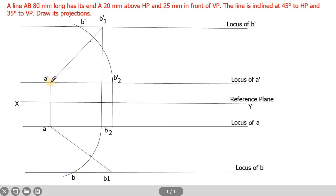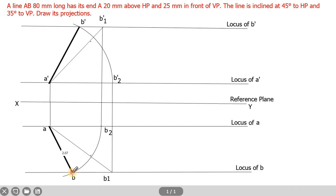Take an HB pencil and join A'B' to get the front view. Similarly, join AB to get the top view. So A'B' is the front view and AB is the top view. That's all — we have drawn the projection when a line is inclined at 45 degrees to HP and 35 degrees to VP.